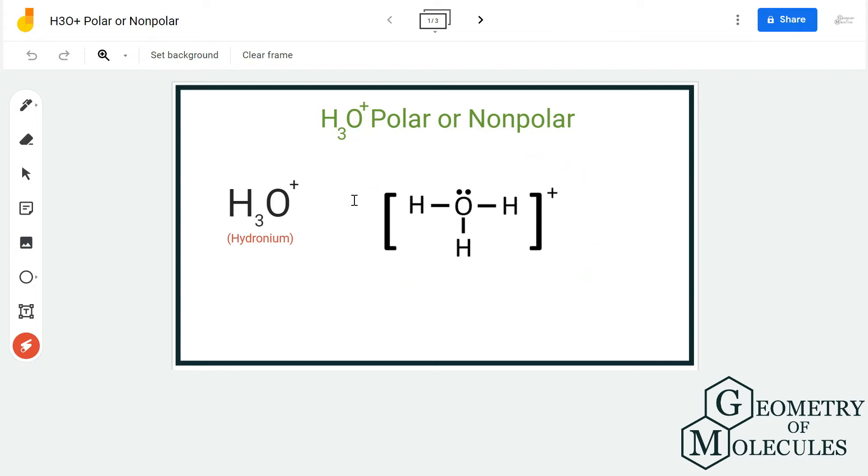Here, H3O plus is an ion because it has a positive charge, which means it is giving away one electron and it comprises of one oxygen atom and three hydrogen atoms. So we will first look at its Lewis structure.